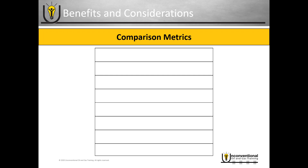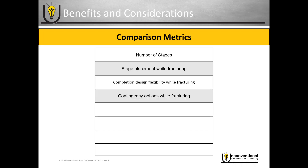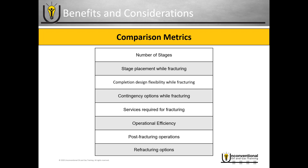In this exercise, we'll be looking at a couple of different ways to measure the benefits and considerations for each completion type. We'll start by looking at the number of stages, stage placement while fracturing, completion design flexibility while fracturing, contingency options while fracturing, services required for fracturing, operational efficiency, post-fracturing operations, and refracturing operations. Each of these metrics can have a significant impact on the effectiveness, efficiency, and overall cost of each completion system for your specific application.